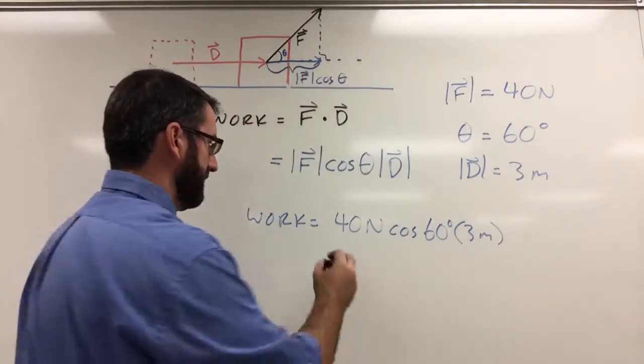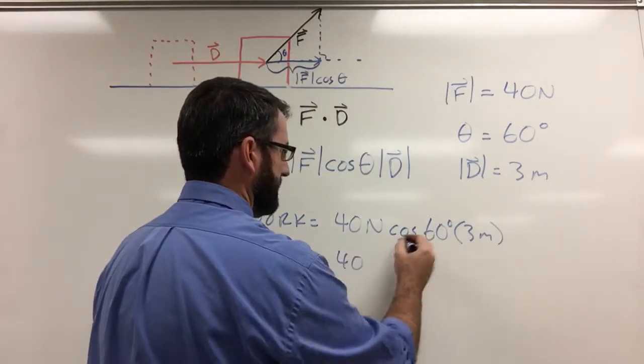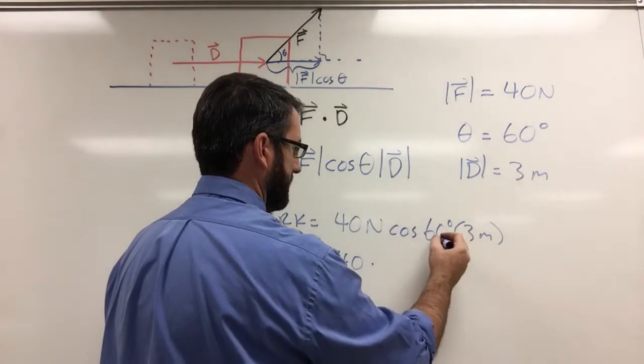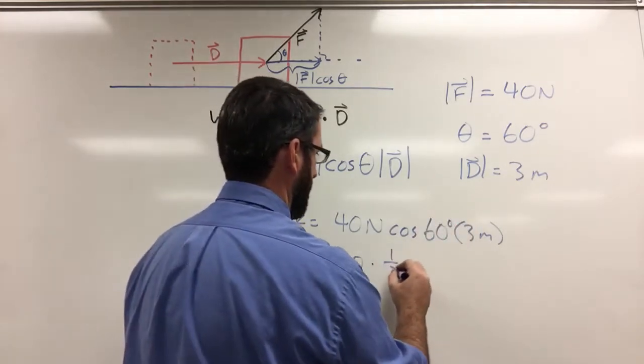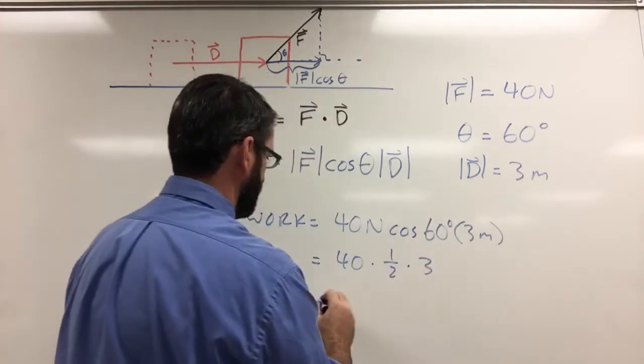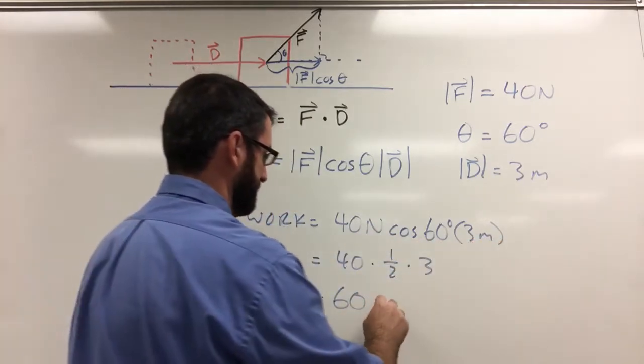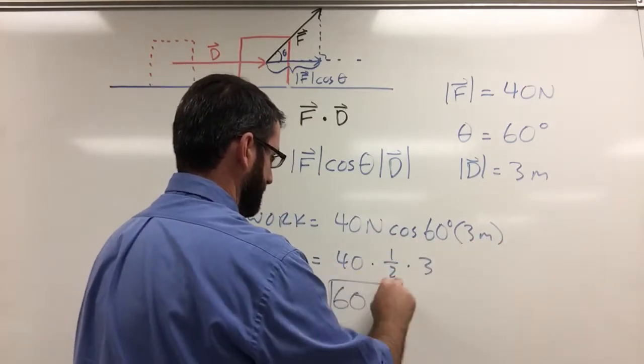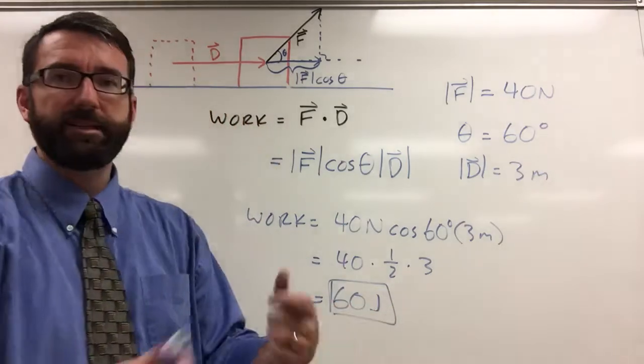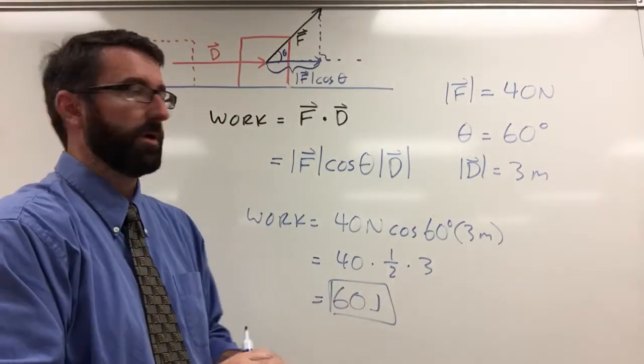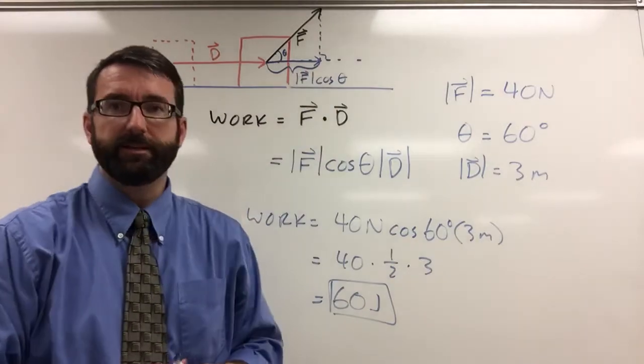And we know that, so this is 40 times, the cosine of 60 degrees is one half, times 3, so this is 60 newtons times meters is going to give us joules. So this is 60 joules is going to be the amount of work done in this situation.